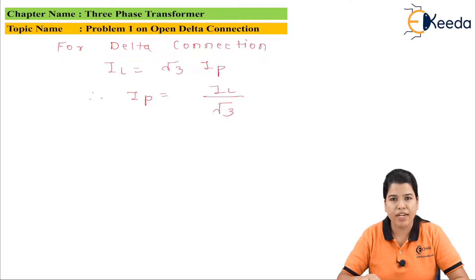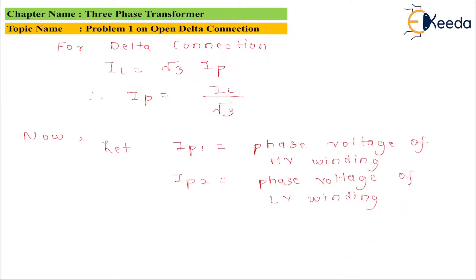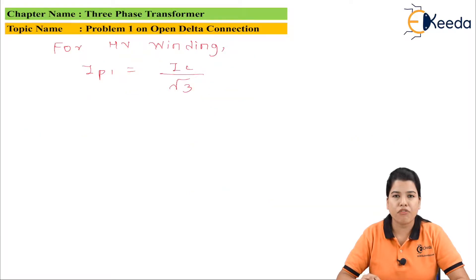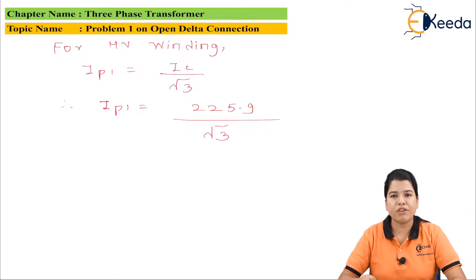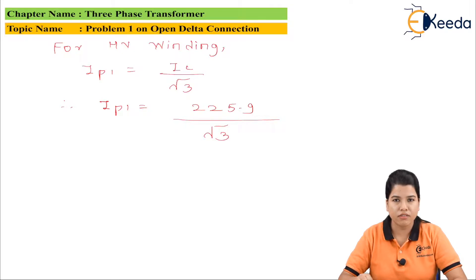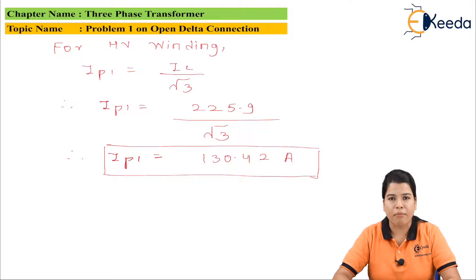Let IP1 be the phase current of the HV winding and IP2 be the phase current of the LV winding. For the HV winding: IP1 = IL / √3 = 225.9 / √3, which gives IP1 = 130.42 amperes.